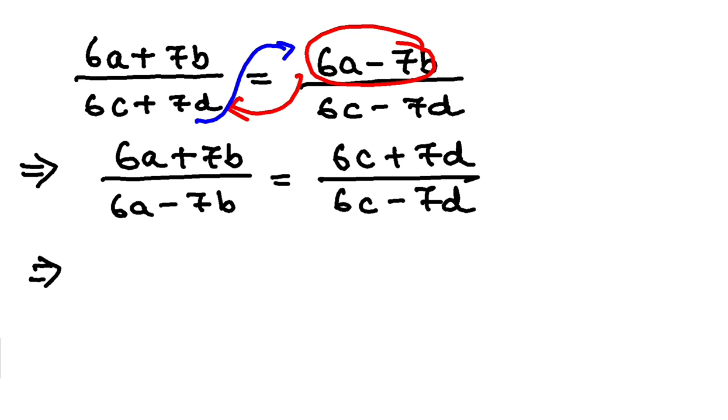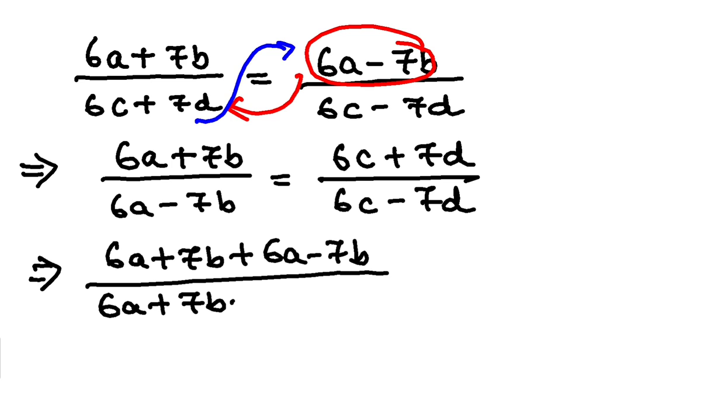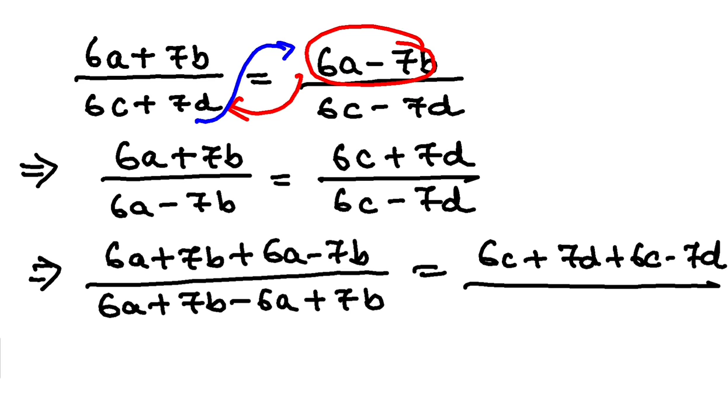Now on this ratio I am going to apply componentum and dividendo. So a plus b, so 6a plus 7b plus 6a minus 7b by numerator minus denominator, so 6a plus 7b minus 6a plus 7b. Same thing I will do here, 6c plus 7d plus 6c minus 7d by 6c plus 7d.